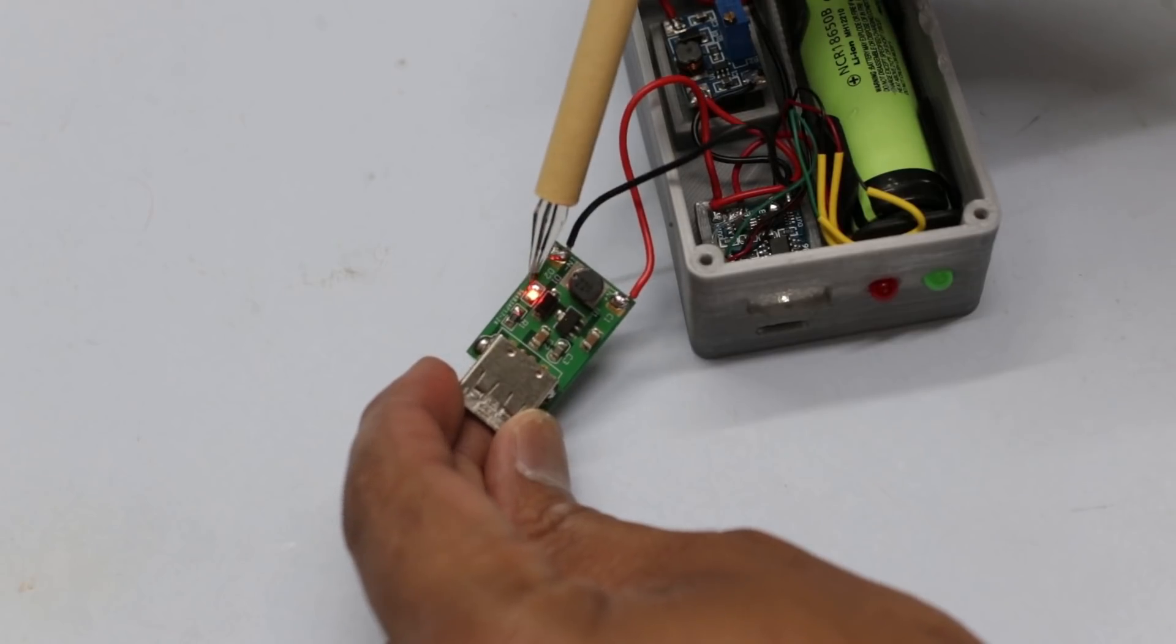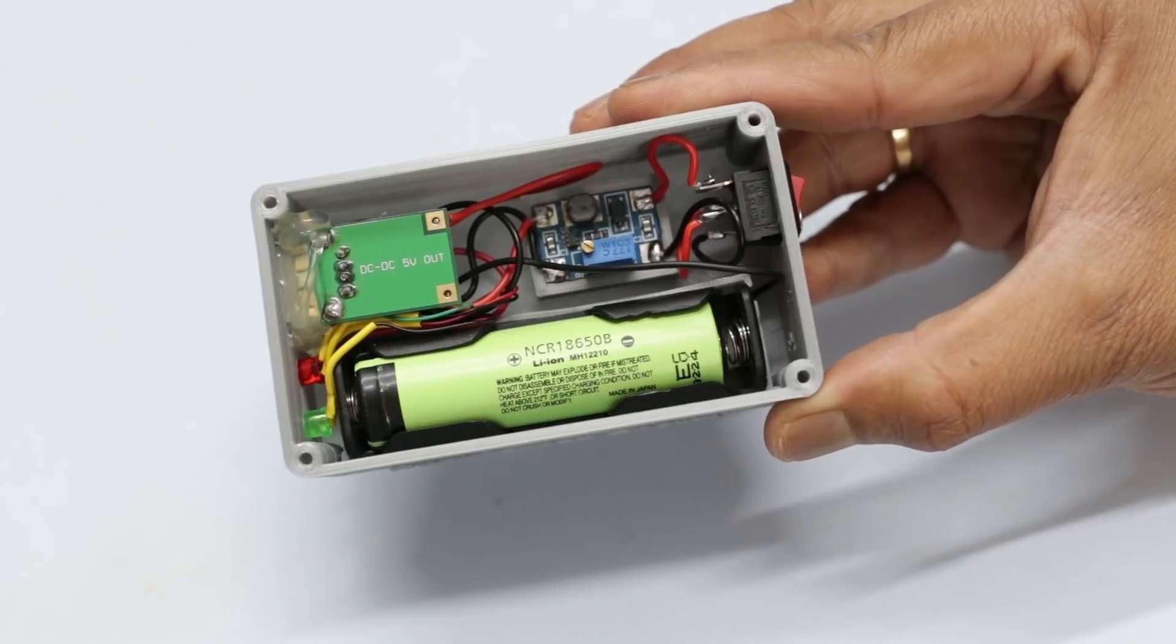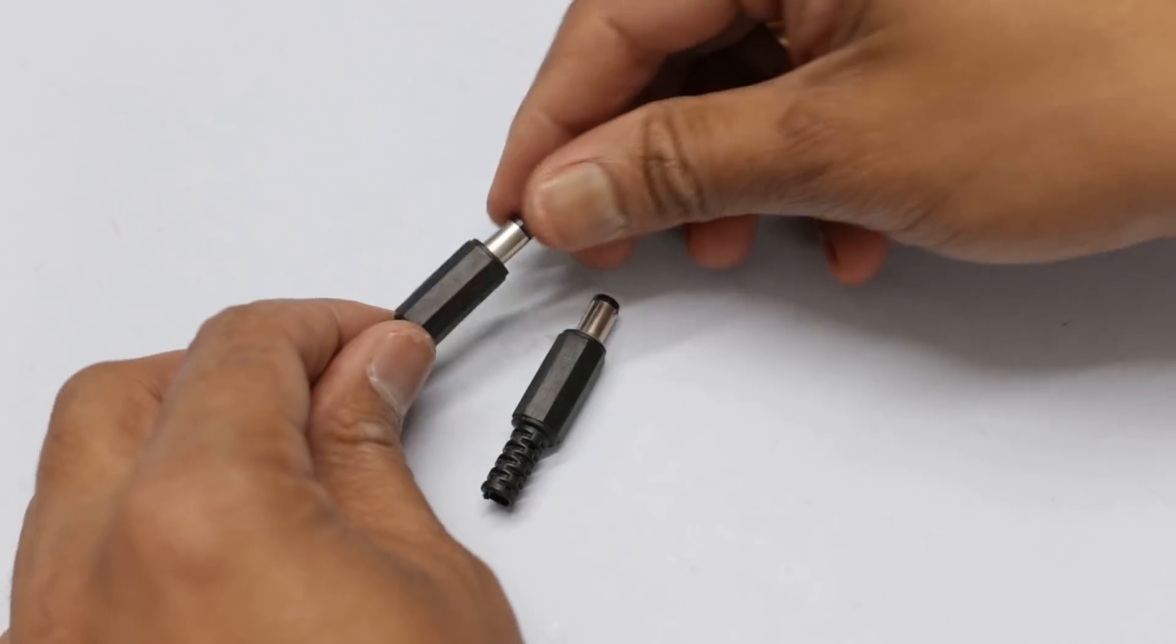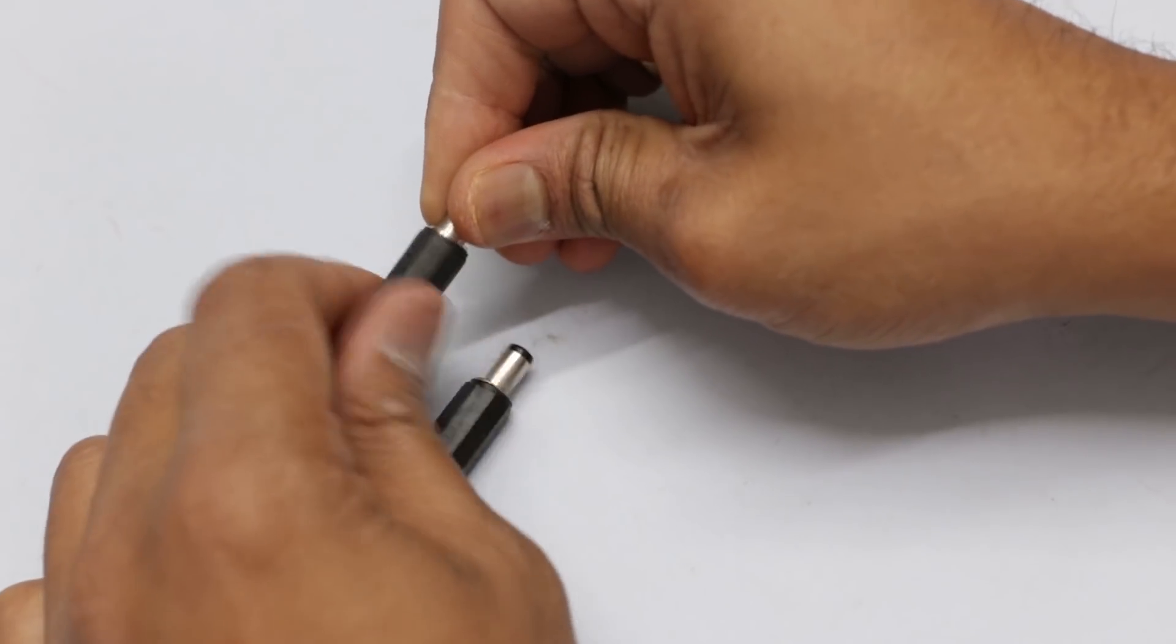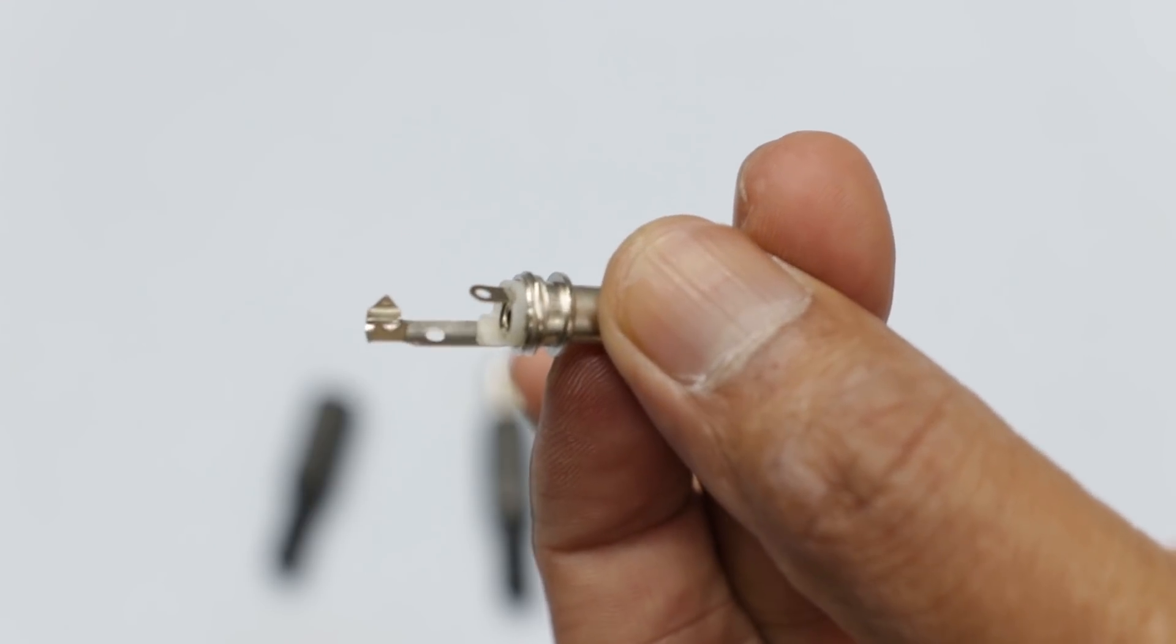I have removed the red LED from the USB boost converter as it is drawing unnecessary power from the battery. At last, I have made a DC adapter cable to connect the output from the mini UPS to the Wi-Fi router.